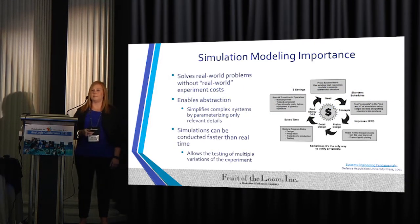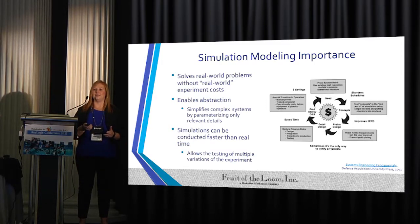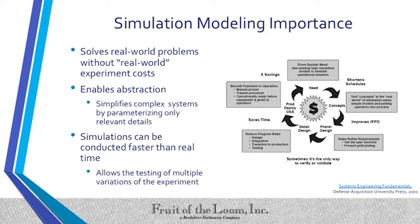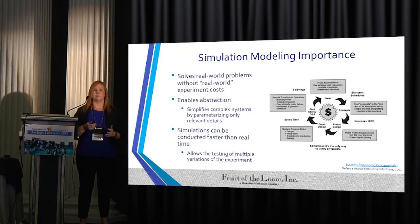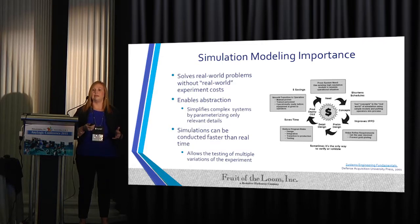As for simulation modeling importance: as a company, Fruit of the Loom can't actually go out and build a new DC and then experiment on it. We have to figure out ways of testing new locations that the transportation team or leadership may want to investigate, and that's what simulation really helps us with. It enables abstraction — we can get out the relevant details of the supply chain, which are very complex systems, focus on what matters, and communicate our assumptions to business partners.